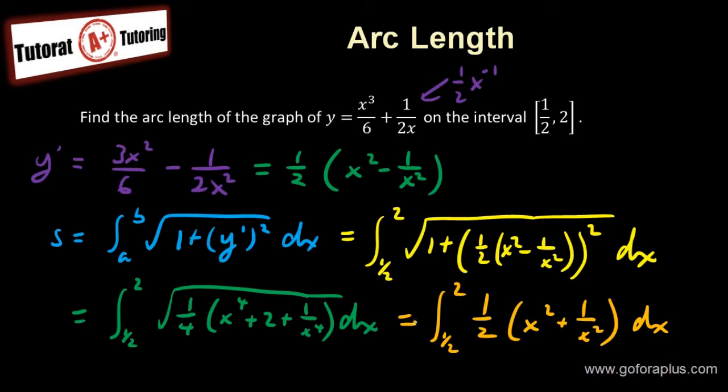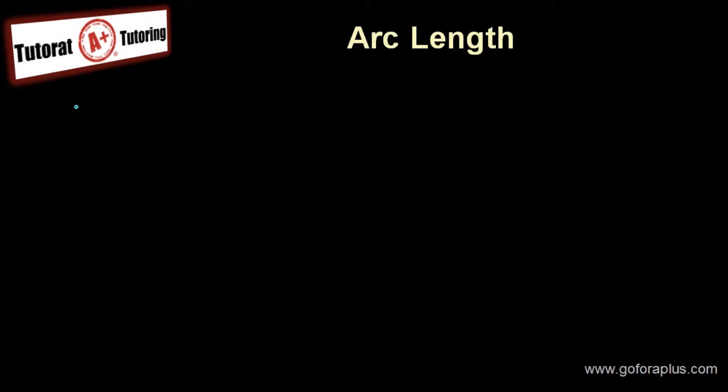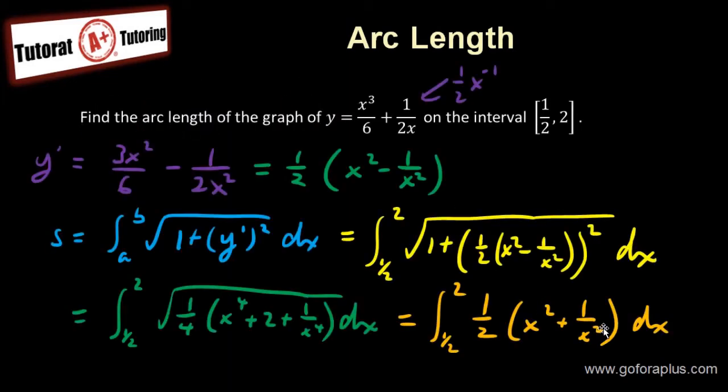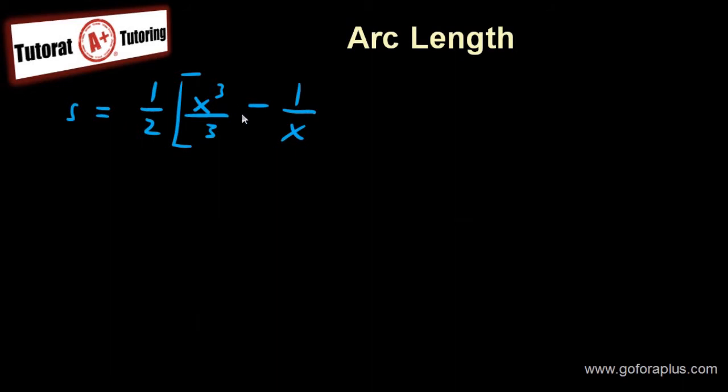And then what do I need to do here? I just need to evaluate the integral now. If you evaluate the integral, this is going to be 1 half stay in front. And then I have my x squared becomes x cubed over 3 minus 1 over x, because that was x to the power of minus 2. So it becomes minus 1 over x. This is from 1 half to 2.